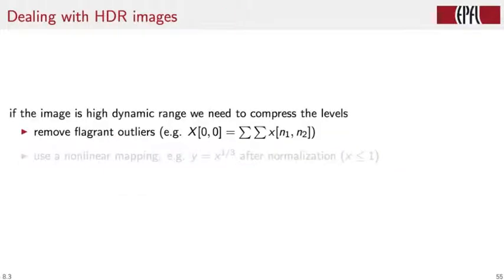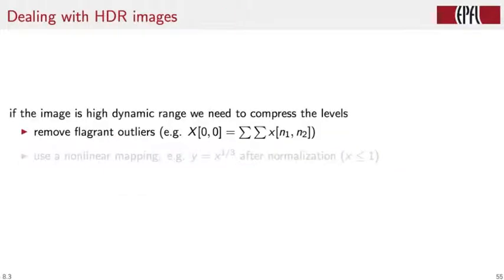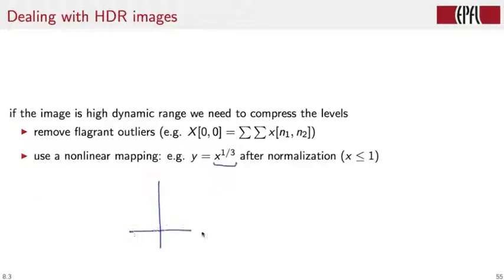So we take a two-step approach. First, we remove the flagrant outliers. For instance, the value of the DFT in 00 is simply the sum of all pixel values. Now, for grayscale images where all pixels are positive values between 0 and 1, this will be definitely a large value with respect to any other coefficient. And then to remove the tail, we use nonlinear mapping. For instance, we use a curve like x to the power of one-third after normalizing all values between 0 and 1. So for instance, if this is the range between 0 and 1, the nonlinearity will map this range like so, which means that the tail outliers that we've seen before will be squished in a band that is very close to 0, and so they will appear as black pixels. And the rest of the values, those that we're interested in, will occupy the bulk of the dynamic range of the medium.